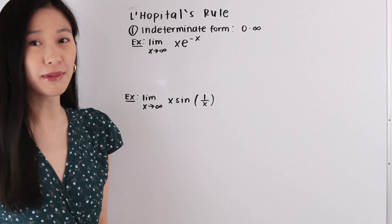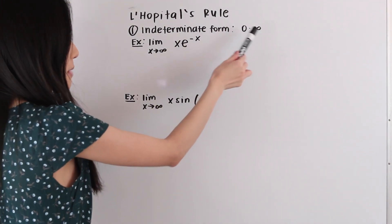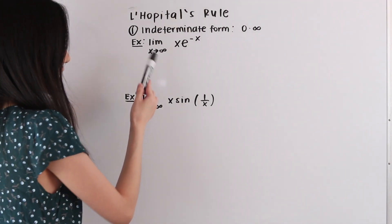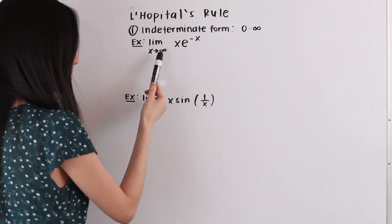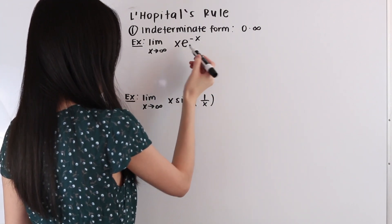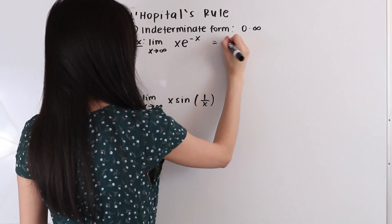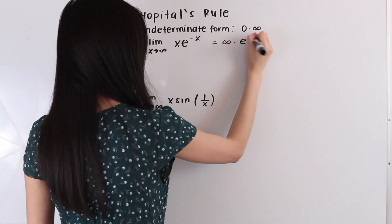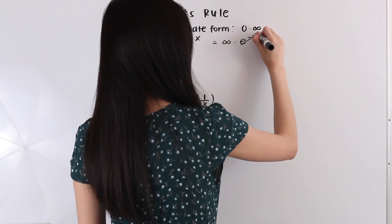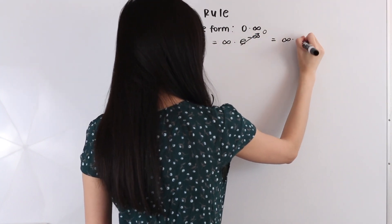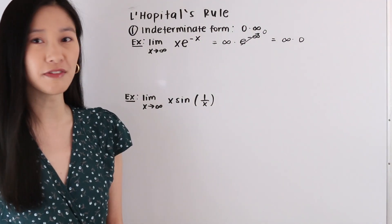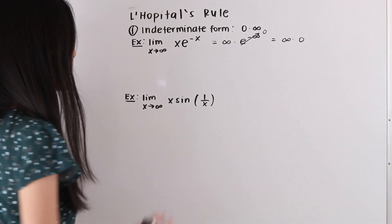The first indeterminate form we're going to look at today is 0 times infinity. In this first example we have the limit as x approaches infinity of x·e^(-x). When we plug in infinity for x, we get infinity times e^(-infinity), and e^(-infinity) equals 0. So we end up with infinity times 0, which is an indeterminate form, which means we can use L'Hôpital's rule to evaluate this limit.